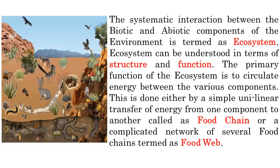The systematic interaction between the biotic and abiotic components of the environment is termed as ecosystem. Ecosystem can be understood in terms of both structure and function. The primary function of the ecosystem is to circulate energy between the various components. This is done either by a simple unilinear transfer of energy known as food chain, or through a complicated network of several food chains termed as food web.